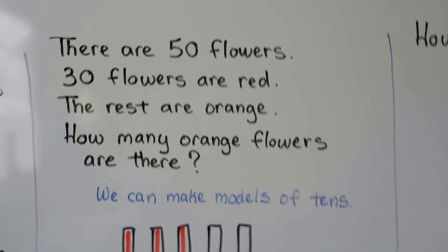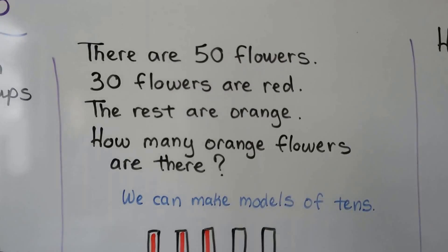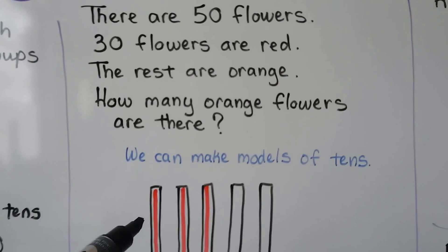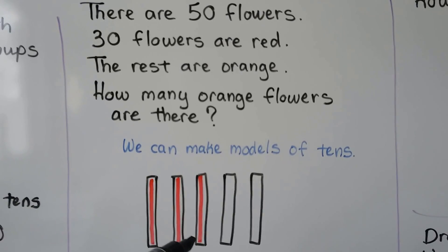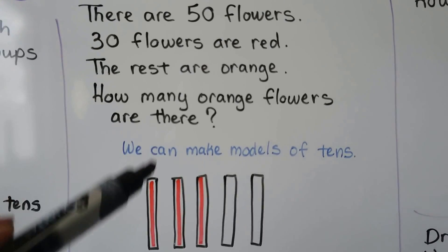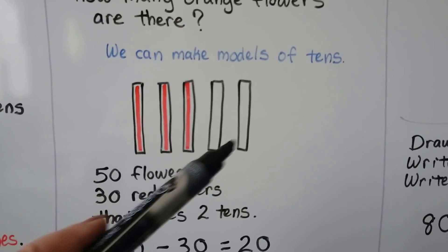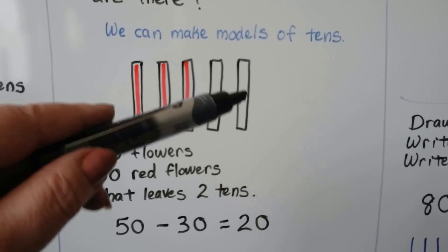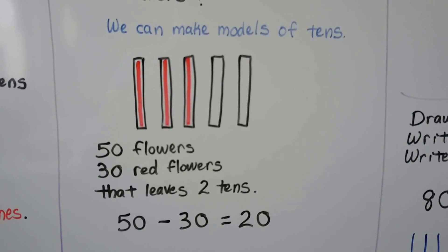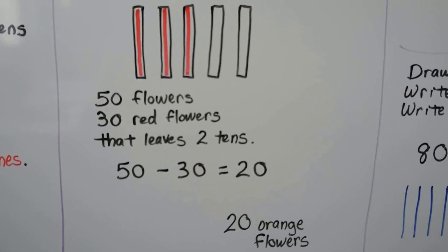Here we have a word problem. There are fifty flowers; thirty flowers are red and the rest are orange. How many orange flowers are there? We know there are fifty flowers in all, so we can make five tens for the fifty. We can color three of the tens red for the thirty red flowers and see what's left over. The ones that aren't red must be the orange ones. Fifty flowers minus thirty red flowers leaves two tens. Two tens is equal to twenty. Fifty minus thirty is equal to twenty — twenty orange flowers.